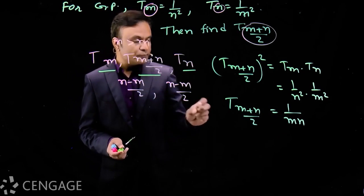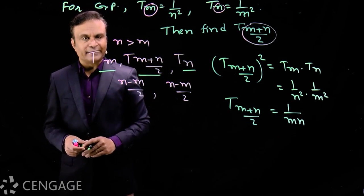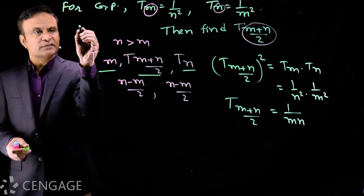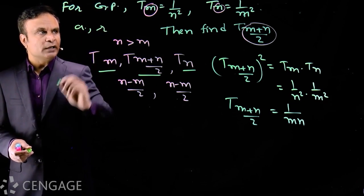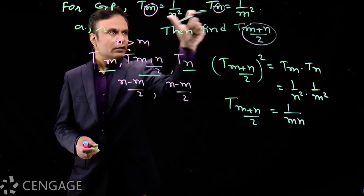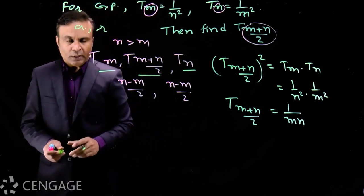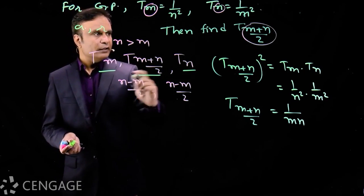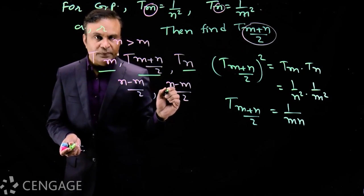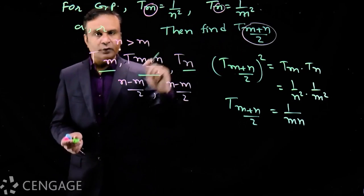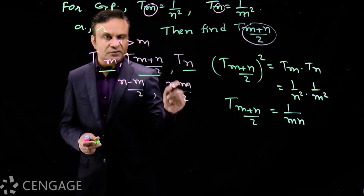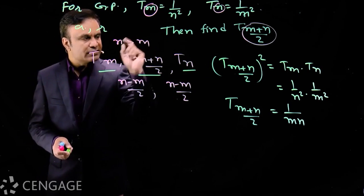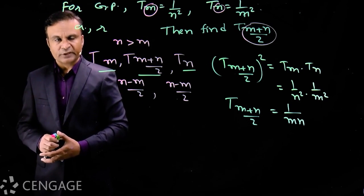Notice how important the observation is here — we did not solve this blindly. The alternative approach would be to set first term as a and common ratio as r, form two equations from the given values, solve for a and r, then substitute into the (m+n)/2 th term. But the conceptual observation does the work much more elegantly. We must read the given data in a question very carefully.